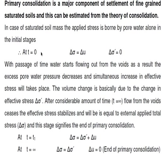Effective stress is the intergranular pressure between the soil particles. The effective stress equation is very simple: total stress on the soil mass in saturated condition minus the pore water pressure. But here there is a different term — excess pore water pressure. This is not the same as static pore water pressure, because you already have pore water pressure from the existing water head.